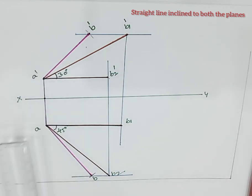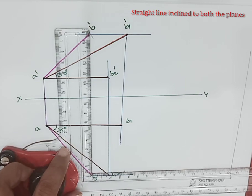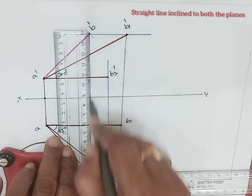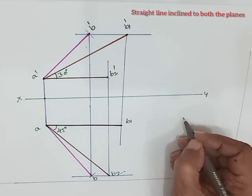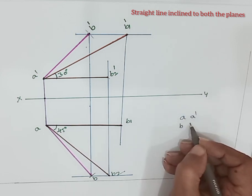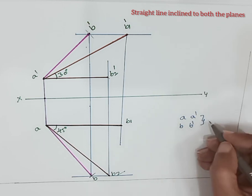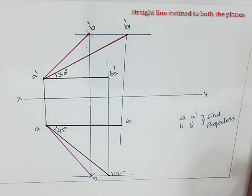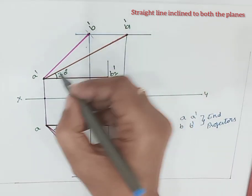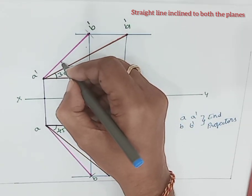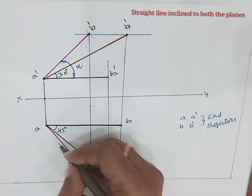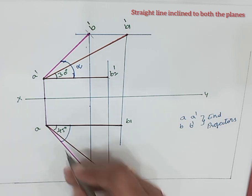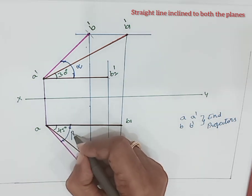A and A-dash are on the same projector line, and B and B-dash are also on the same projector line. A, A-dash, B, B-dash are called end projectors. A-dash B-dash is the front view — that is the radius length — and this angle is denoted by alpha, which is the front view inclination with HP. AB is the top view and this angle is denoted by beta, which is the top view inclination with VP.